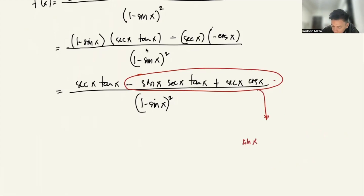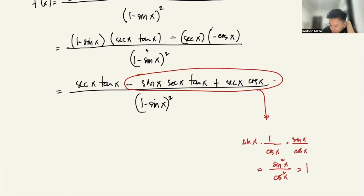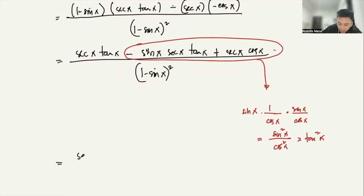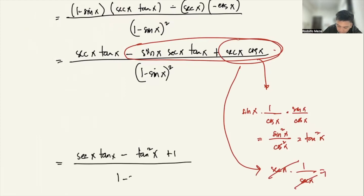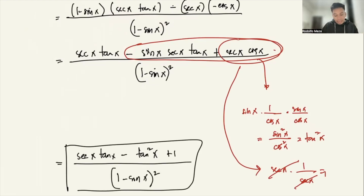Working out the simplification: sine(x) times secant(x) times tangent(x) equals sine(x) times (1/cos x) times (sin x/cos x) = sine squared(x)/cosine squared(x) = tangent squared(x). And secant(x) times cosine(x) = 1. So the numerator becomes secant(x)·tangent(x) minus tangent squared(x) plus 1, all over (1 minus sine x) squared. This is the derivative. If you have any questions or clarifications, please let me know. Thank you.